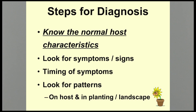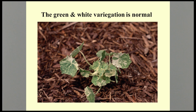There are several steps to diagnosing plant problems. First, before we can tell if there's something wrong with a plant, we need to know what the normal healthy plant is supposed to look like. Some plant varieties, for instance, may have unusual characteristics such as variegation or dwarfing. In this example, the green and white pattern on the leaves of this nasturtium are normal — it's the variety Alaska, a variegated variety.